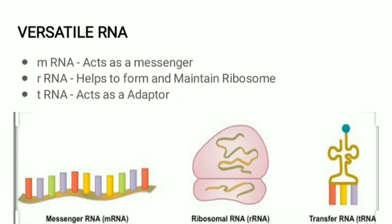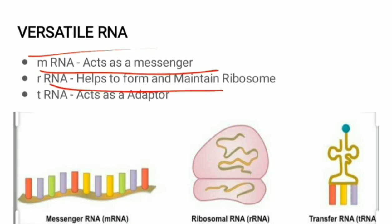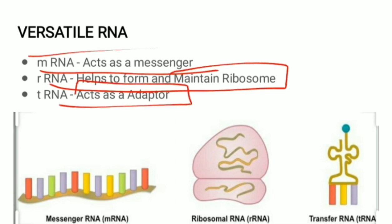Next, let us see about the versatile nature of RNA. RNA can perform a wide range of functions: mRNA acts as a messenger, rRNA helps form and maintain the ribosome, and tRNA acts as an adapter. Due to this wide variety of functions, it can be called versatile RNA.